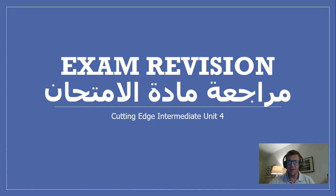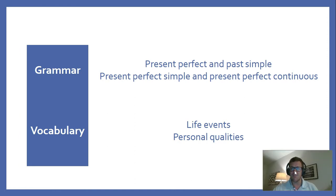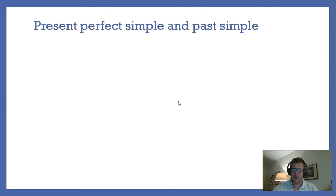Hi, this is a video to help students with exam revision for Cutting Edge Intermediate Unit 4. In this unit we studied grammar on present perfect and past simple, and also present perfect simple and present perfect continuous. So there's quite a lot of heavy grammar there. The vocabulary we did was life events and personal qualities. So first of all, let's look at the grammar.